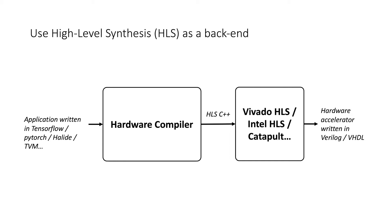You do lose something when you target HLS — you don't get complete control — but the improvement in productivity is absolutely tremendous. If you can't get the compiler working generating HLS, there's no way you're going to get it working with RTL. So even if you want to squeeze out that last bit of improvement using custom RTL, you should probably start with high-level synthesis.